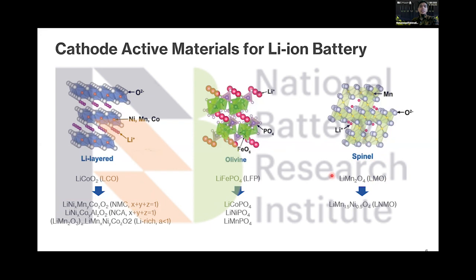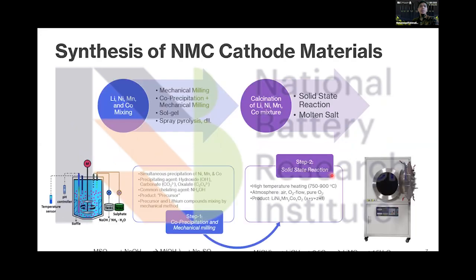In this presentation I will focus on the NMC cathode. For the synthesis method, there are two main steps: mixing of lithium, nickel, manganese, and cobalt as homogeneously as possible, with methods including simple mechanical milling, co-precipitation followed by mechanical milling, sol-gel, and spray pyrolysis. In this presentation we will discuss more details of the co-precipitation method.